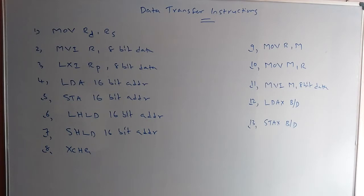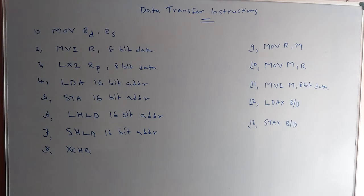In the 8085, there are three types of instructions based on size. The instruction size can be 1 byte, 2 bytes, or 3 bytes. Now I am discussing how to identify whether an instruction is 1 byte, 2 bytes, or 3 bytes — that is the point I am covering in this lecture.